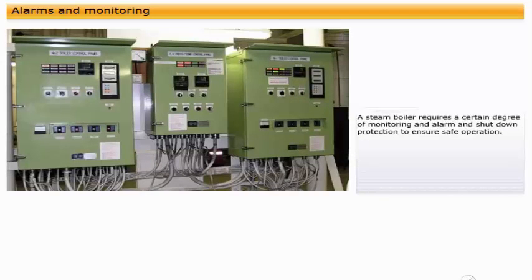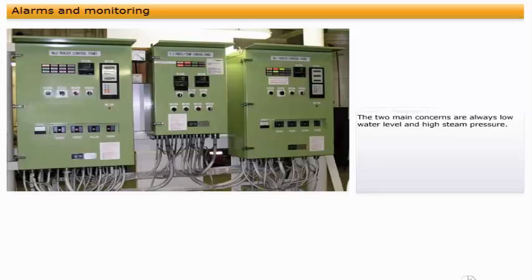A steam boiler requires a certain degree of monitoring and alarm and shutdown protection to ensure safe operation. The two main concerns are always low water level and high steam pressure. A very low water level can result in overheating, resulting in boiler failure. This is often termed low-low level.